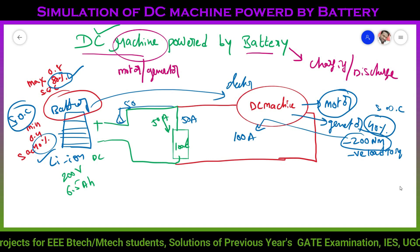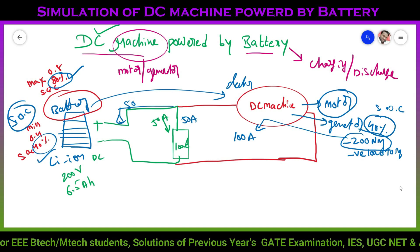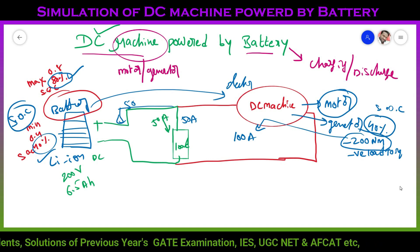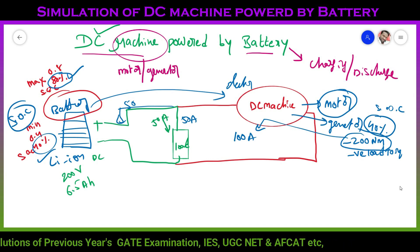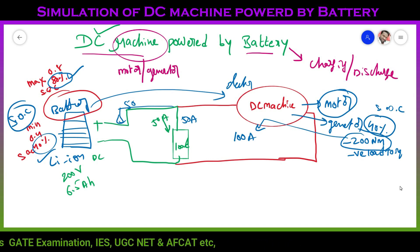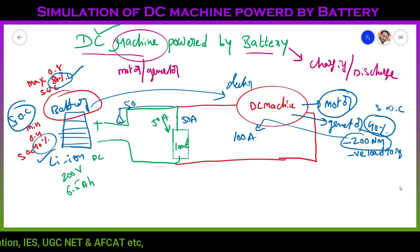And again, batteries keep working and gradually decrease their capability to its minimum stage. Again minimum stage comes, again this DC motor will act as a generator. Then this process is recycling. So now, design this circuit in MATLAB.